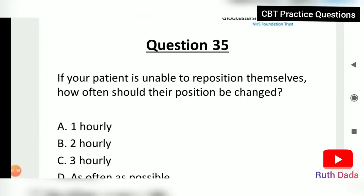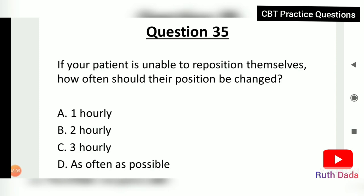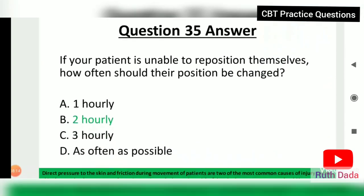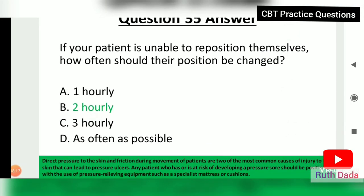Question 35: If your patient is unable to reposition themselves, how often should their position be changed? The answer is two-hourly. Direct pressure to the skin and friction during movement are two of the most common causes of skin injury that can lead to pressure ulcers. Any patient at risk should be positioned with pressure-relieving equipment such as specialist mattresses or cushion chairs.